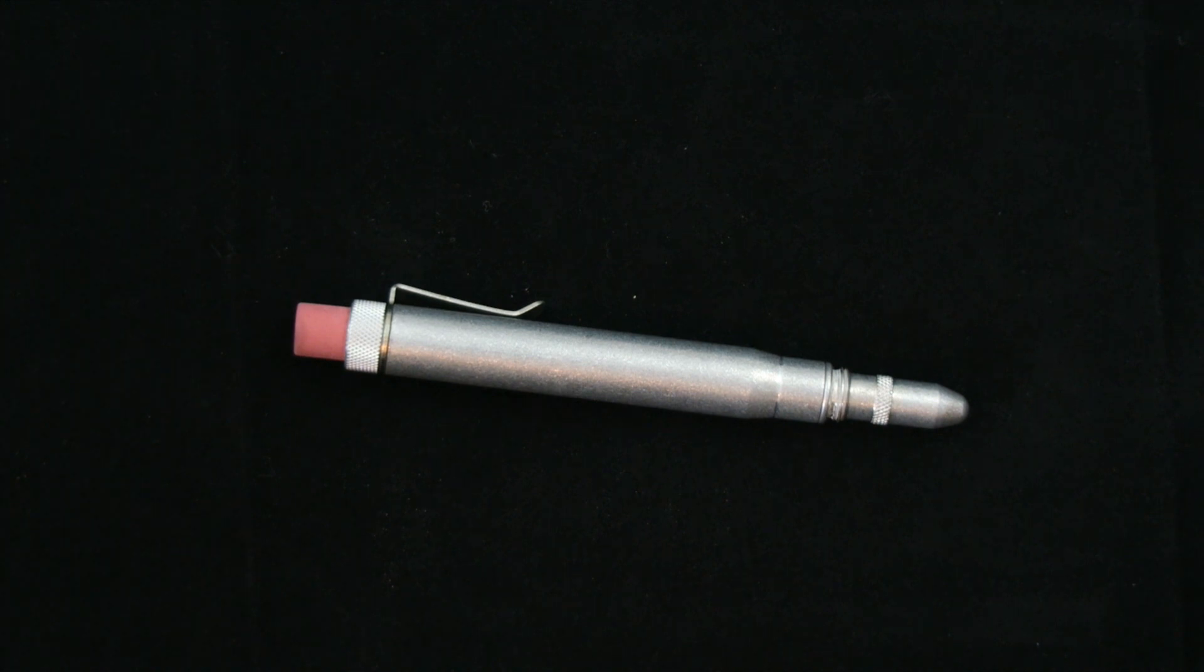This version of the Metal Shop Twist Bullet Pencil is the raw aluminum, so that means that the body, the cap, and the bullet itself come in a raw aluminum finish.